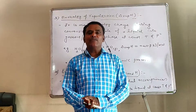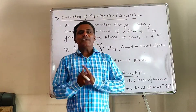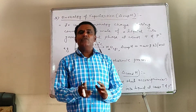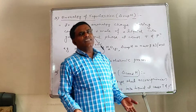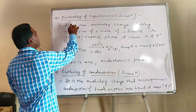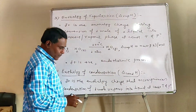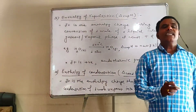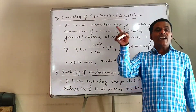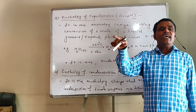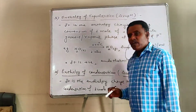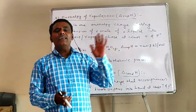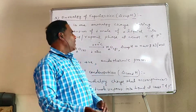When we convert one mole of liquid to vapour phase keeping pressure and temperature constant, whatever enthalpy change or heat change occurs, that is known as enthalpy of vaporization. Another definition from your reference or textbook: it is the enthalpy change that accompanies vaporization of one mole of liquid at constant temperature and constant pressure.